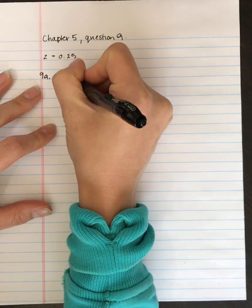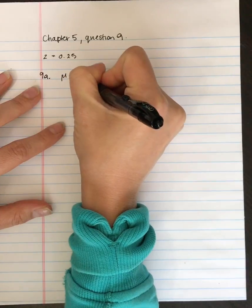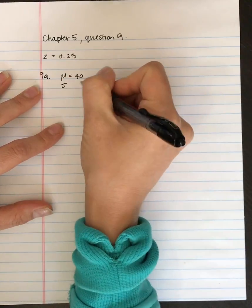9a, the distribution has a mean of 40 and a standard deviation of 4.